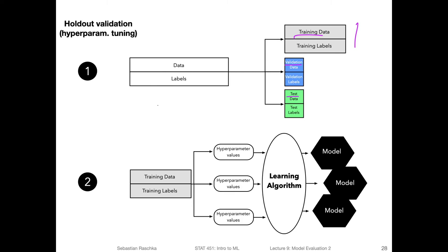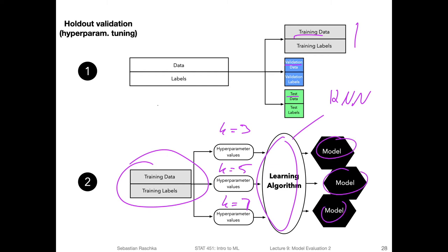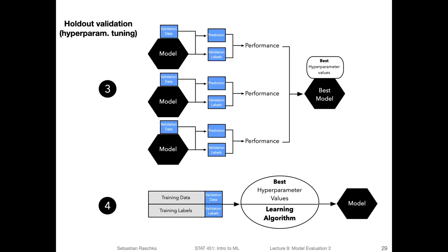In the second step, in the previous video, we only considered a fixed hyperparameter setting. Now we are considering different settings. We use the training data and then fit different models. The machine learning algorithm is the same—you can think of it as a k-nearest neighbor algorithm. And for the hyperparameter values, you can think of maybe k equals three, k equals five, k equals seven. Depending on what hyperparameter you choose, you will get different models. Each model corresponds to one hyperparameter setting.